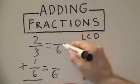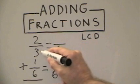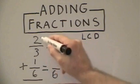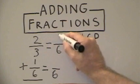For the top fraction, we take six divided by three to get two. We take that two, multiply it by the two to get four.